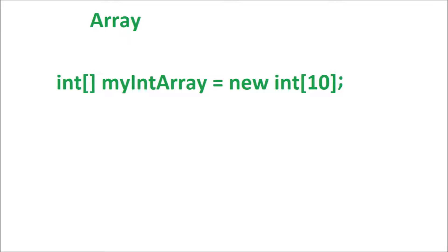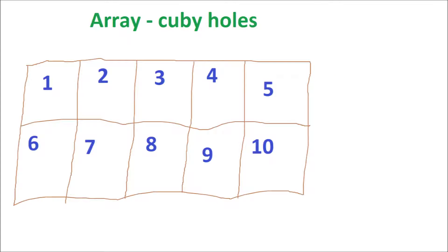First up is an array. An array is the simplest of collections. You can think of it like a set of pigeonholes. One item can go into each hole. You can easily get to a hole if you know its index.